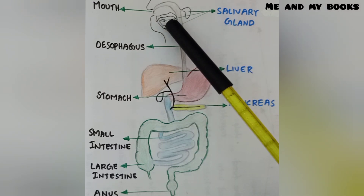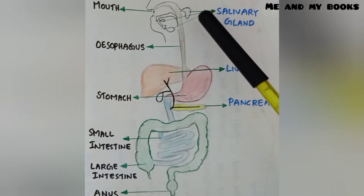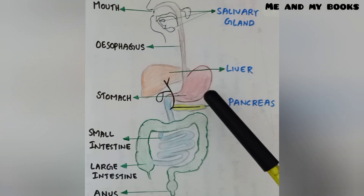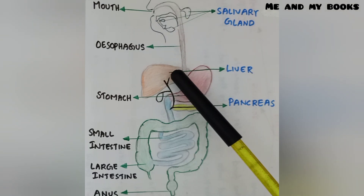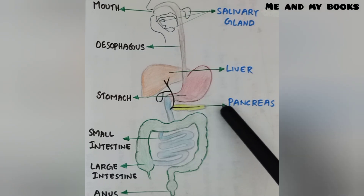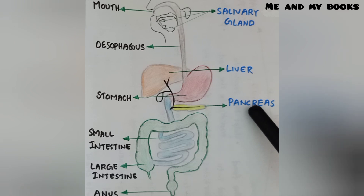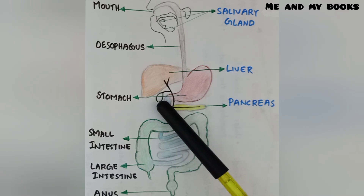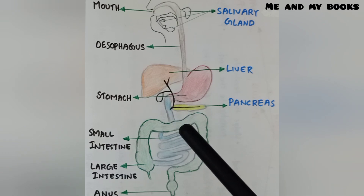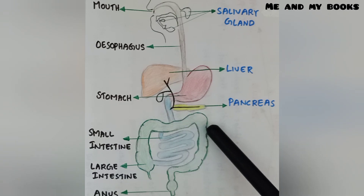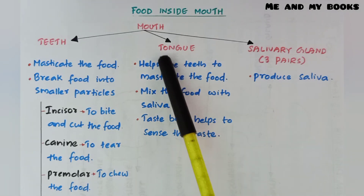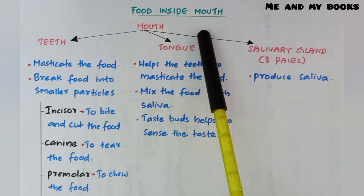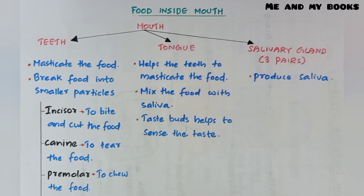Digestive glands are also present. Inside the mouth we can see salivary glands — there are three pairs. Another gland is the liver. Pancreas is also a gland, and one more structure is the gallbladder. Next topic: food inside the mouth.